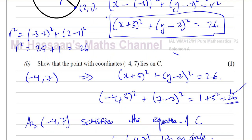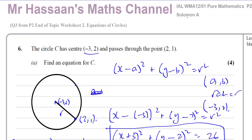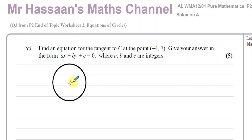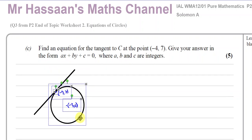Part C says find an equation for the tangent to C at the point negative 4, 7. We have the center of the circle at minus 3, 2 and the point minus 4, 7. The tangent to the circle is a straight line which just brushes the circle at that point without cutting through it. We want to find the equation of that tangent.